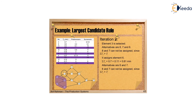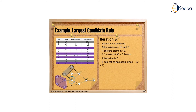In iteration 2, element 3 is selected and the alternatives are 8, 7, and 6. Elements 8 and 7 cannot be assigned since their values exceed the allowed time. Assigning element 6 gives 0.81 minutes, completing workstation 2. In iteration 3, element 8 is selected and the alternatives are 10 and 7, giving a total value of 0.98 minutes for workstation 3.